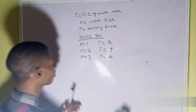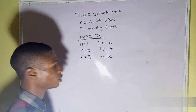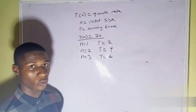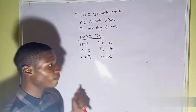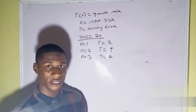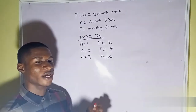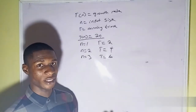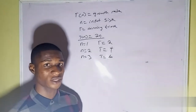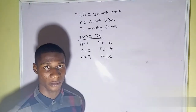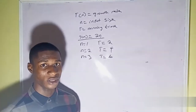T of n, which can also be called the time complexity, can be used to calculate the running time. Then how do we derive T of n itself? There are two ways to derive T of n.